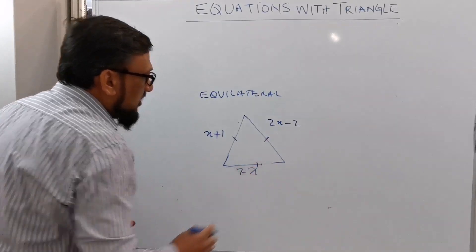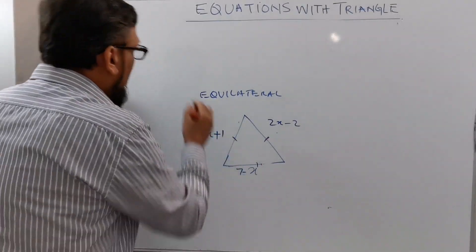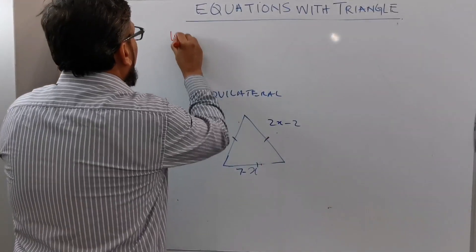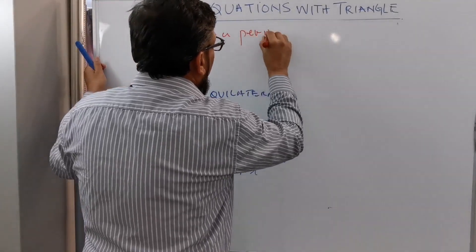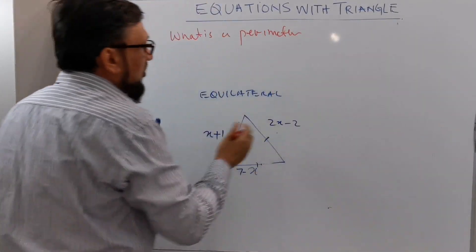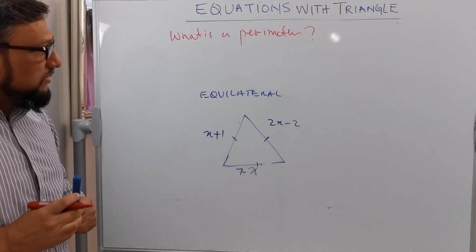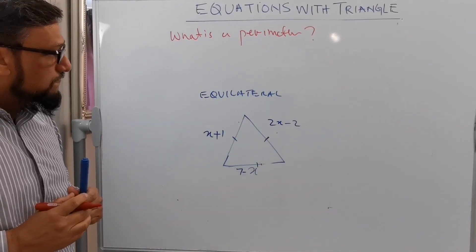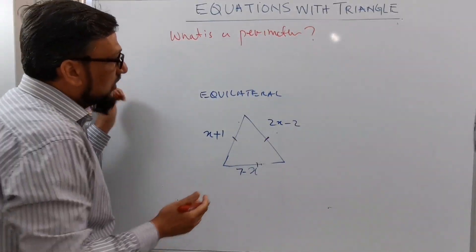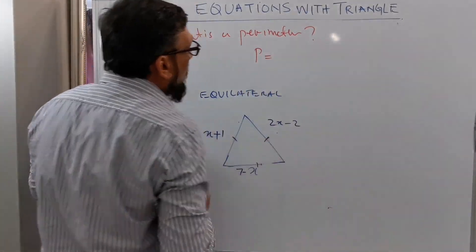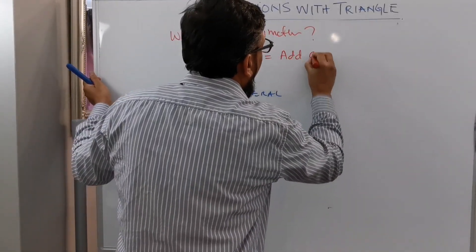Since it's an equilateral triangle, all sides are equal. To find the perimeter, we know that perimeter equals all sides added together. So we add all sides to find the perimeter.